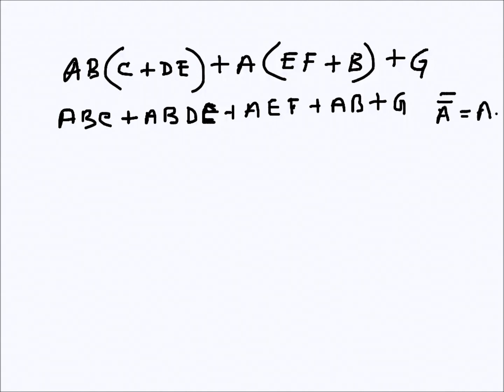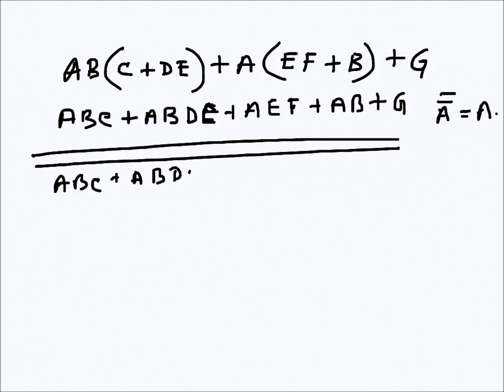...one is A, so I plan to apply De Morgan's theorem. I will put two bars on top of the whole thing. This is ABDE plus AEF plus AB and plus G, so the top bar remains there.